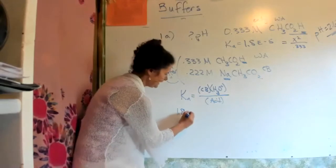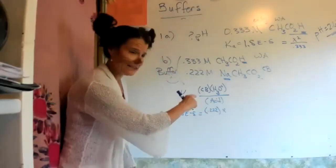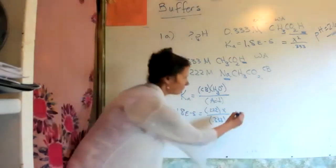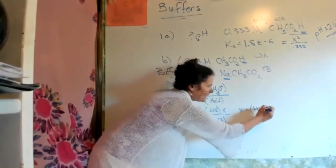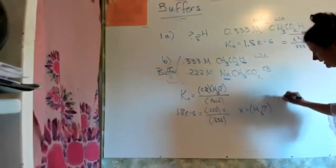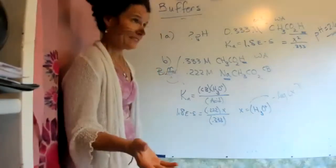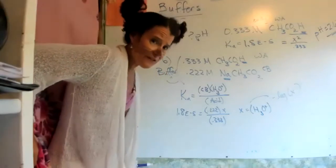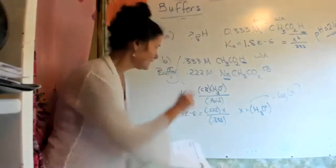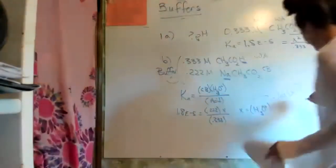So Ka = 1.8×10⁻⁵. We know the conjugate base: 0.222. We have only one X — the hydronium. We know the acid is 0.333. Rearrange and solve. You get your X which is your hydronium, then take the negative log to get pH. The key difference is buffers are never, ever X squared — they're never, ever X squared. We will do X squared tomorrow, but these are not.